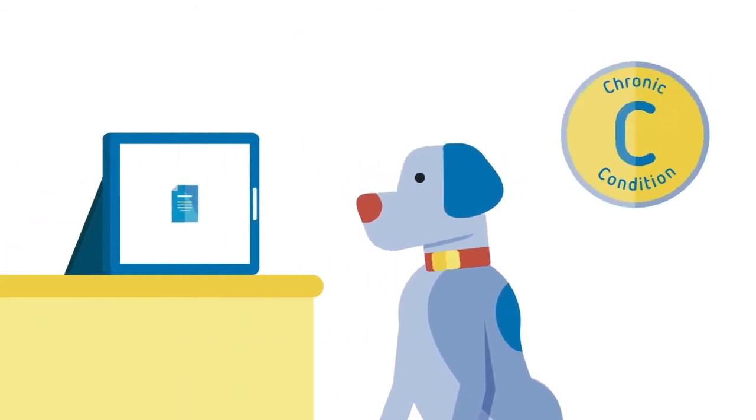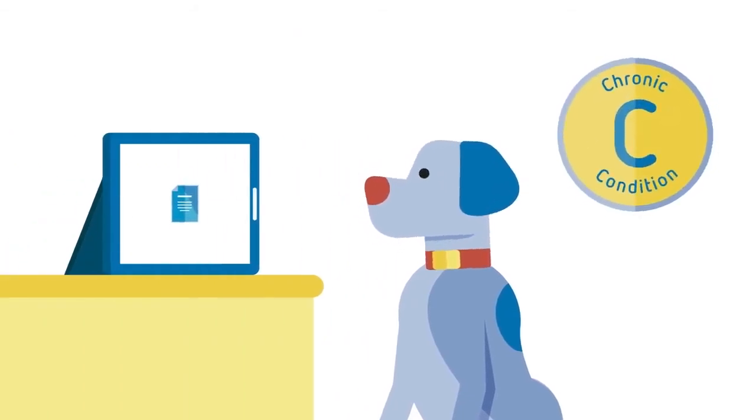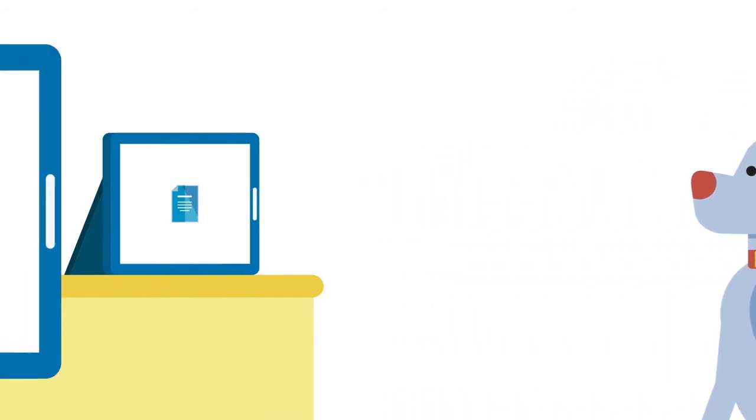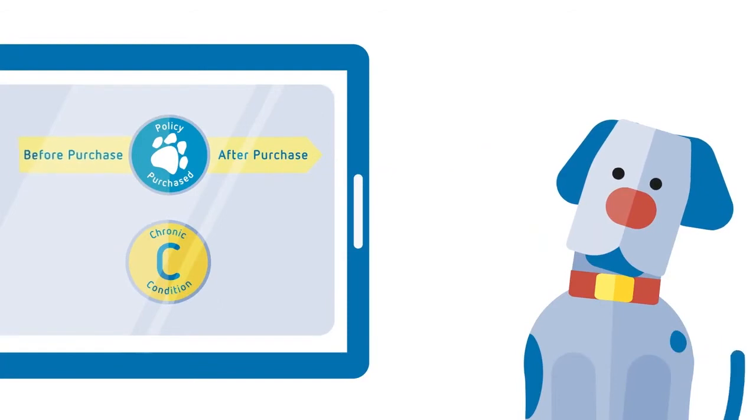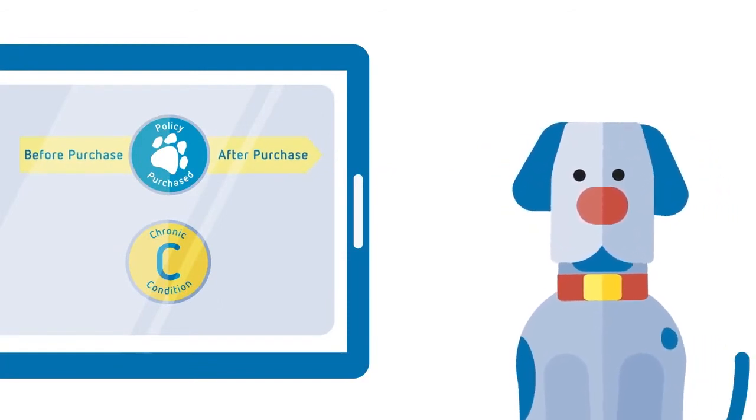A chronic pre-existing condition is a condition that requires ongoing care or is more prolonged in nature. So if your pet displays a chronic pre-existing condition before you purchase a pet insurance policy or during the waiting period, it will never be covered under the policy.